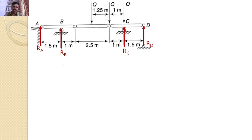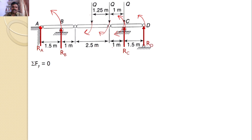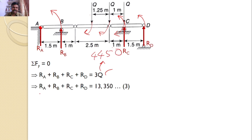Now I will consider the total system under equilibrium. There are reactions R_D, R_C, R_B, and R_A. Applying the first equilibrium equation, sigma F_Y equals zero: R_A plus R_B plus R_C plus R_D equals 3Q. Since Q equals 4,450 newtons, this gives Equation 3: R_A plus R_B plus R_C plus R_D equals 13,350.